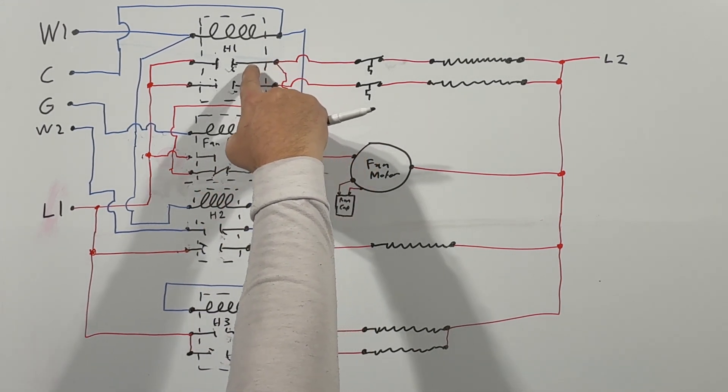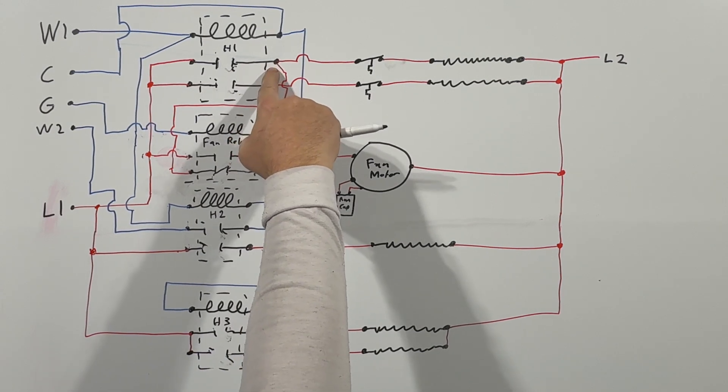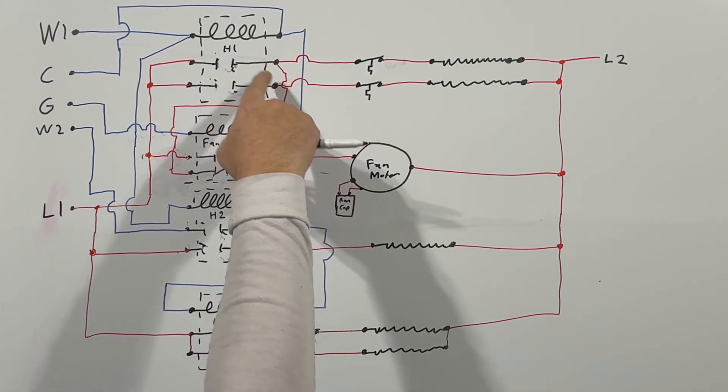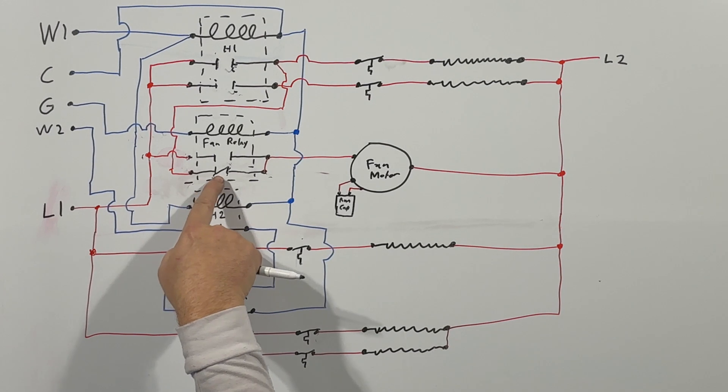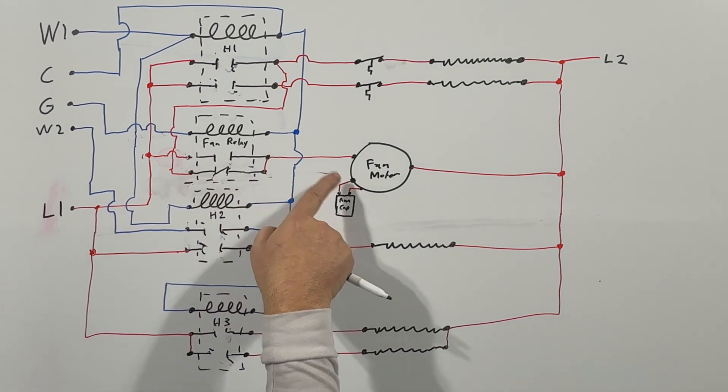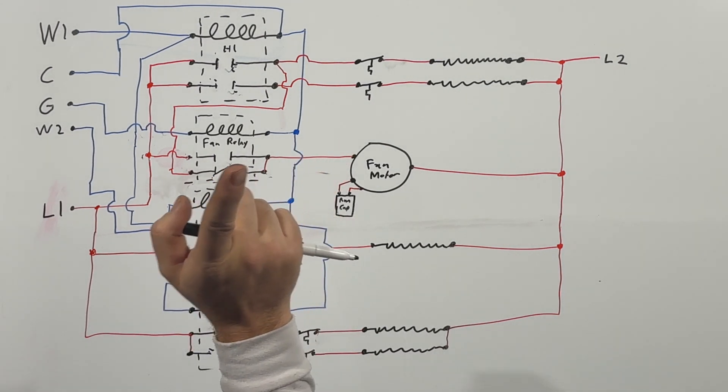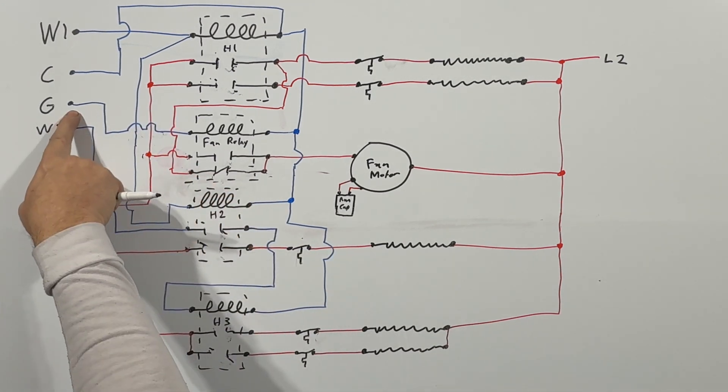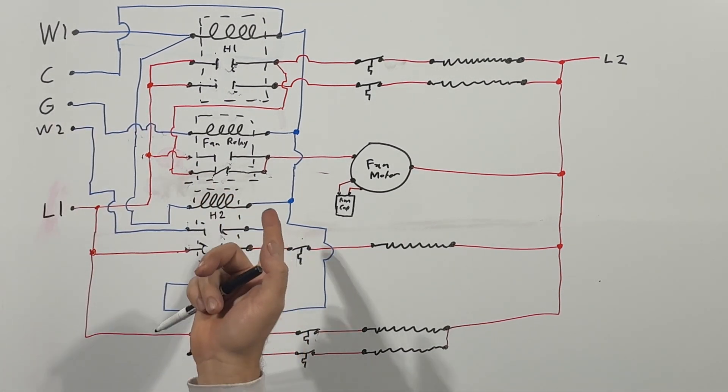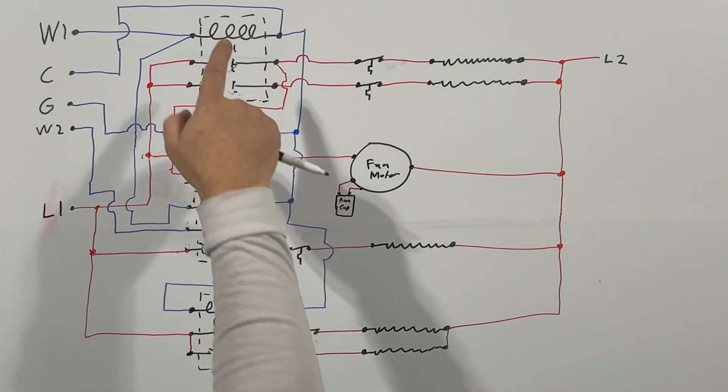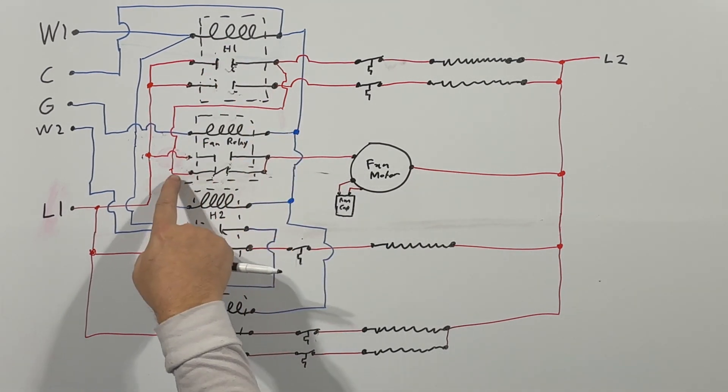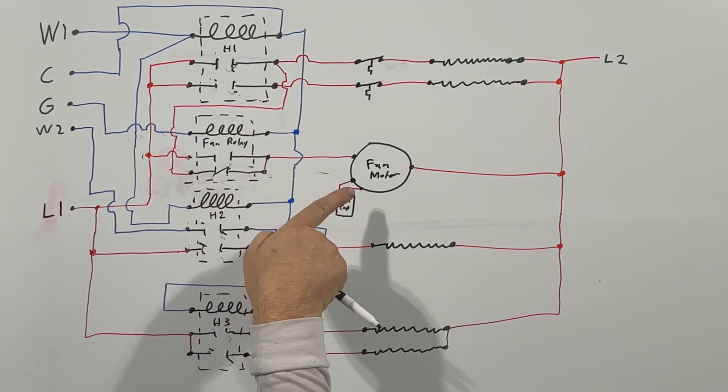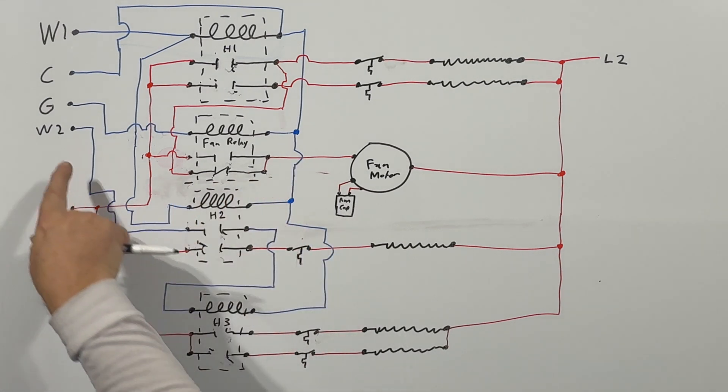Now if you look at our fan relay here, you could see we have a normally closed contact and a normally open contact. So high voltage or line voltage is supplied by H1 on the load side. So if that's energized, we get high voltage which would travel through the normally closed contact and energize your fan. But if we want to run just our fan, so we energize G, well how is that going to work?